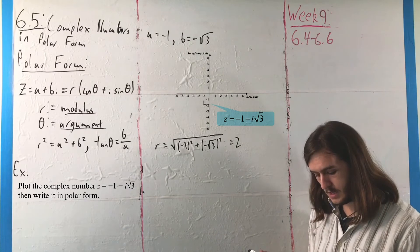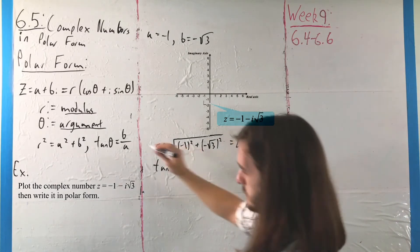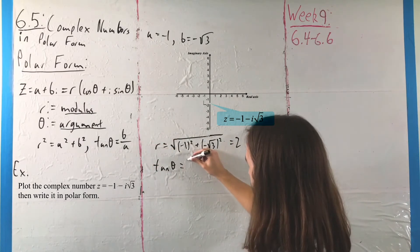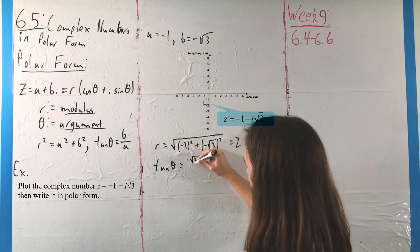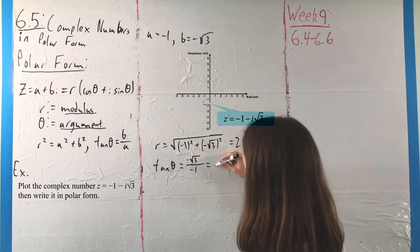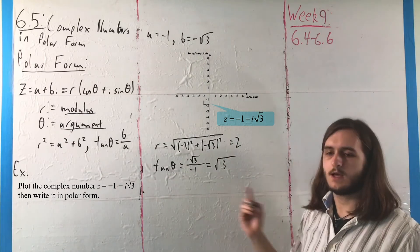To get the argument, we use tan(θ) = b/a. We have b = -√3 and a = -1, so tan(θ) = √3.